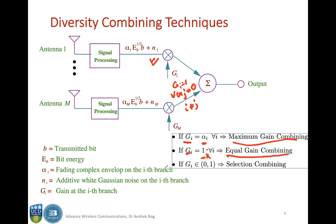The terms equal gain combining and selection combining are intuitively obvious. But why is it called maximum gain combining when G_i equals alpha_i? Setting G_i equal to alpha_i maximizes the SNR at the output, and that is why it is called maximum gain combining. We will verify this with an example.